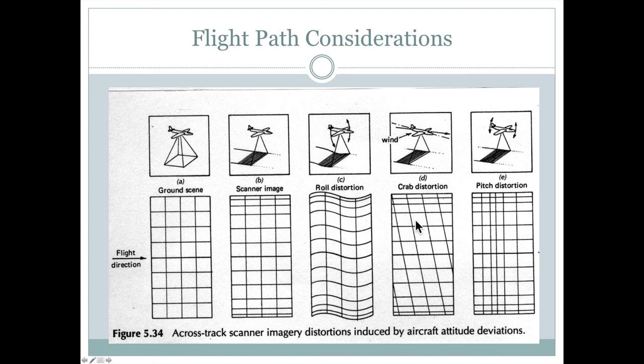And this would be the crab, once again, where they're kind of lined up at an angle. And also the front and back of the plane could be pitching up and down a bit, which would cause some shortening and lengthening of some of these aerial photographs as they're being flown. So all of these different flight path considerations can come into play.